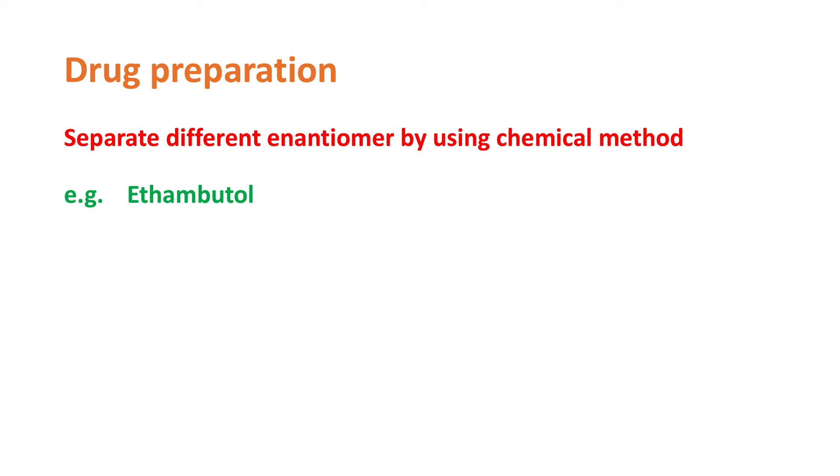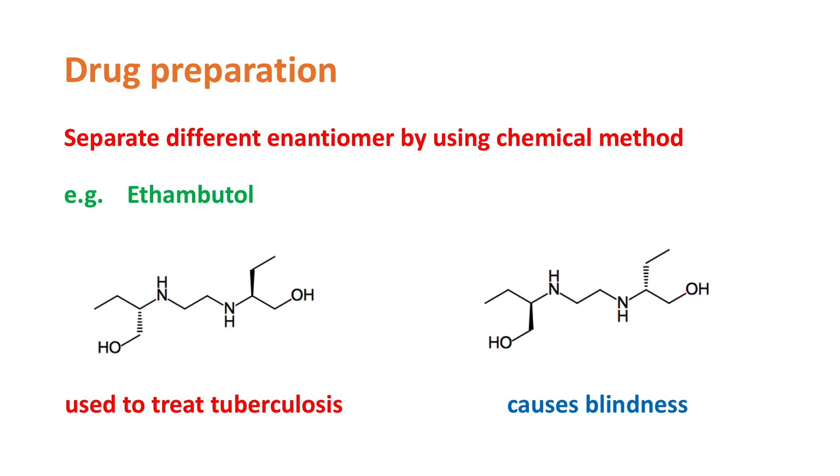Here is an example. This chiral drug can be used to treat TB, but its enantiomer will lead to blindness. And that's the end of this video.